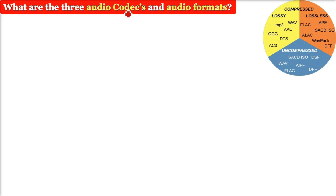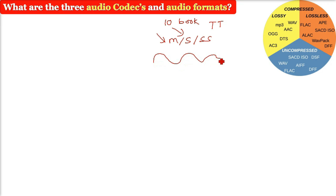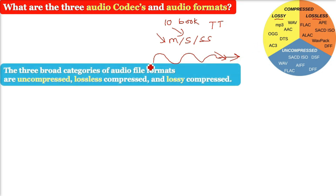What are the three audio codecs and audio formats? An audio format refers to the file extension or technology used, while an audio codec refers to the compression technique. Audio codec is about compressing and decompressing audio — like taking only the books you need from a full shelf. The three broad categories of audio formats are: uncompressed (raw audio), lossless compressed (compressed with no quality loss on decompression), and lossy compressed (some quality is lost on decompression).